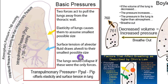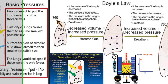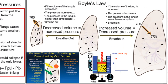It's called the transpulmonary pressure — that's the difference in pressure between the intrapulmonary and the intrapleural space. The transpulmonary pressure is about 4 millimeters of mercury. The next thing to talk about under ventilation is the physical mechanics of breathing, and that means Boyle's Law.